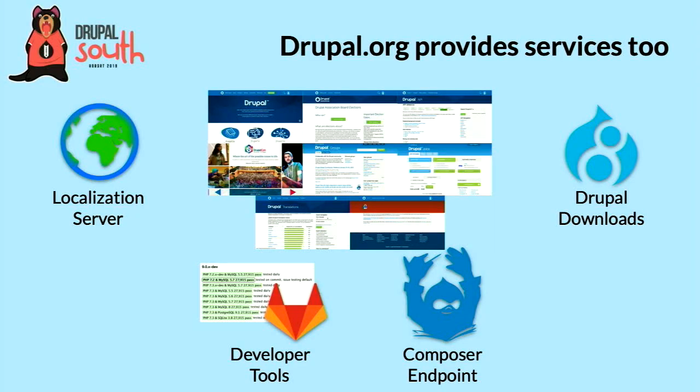Beyond the websites, we also have services. Drupal sites come to Drupal.org for downloading Drupal itself, downloading contributed projects, and a Composer endpoint — since Drupal projects predate Composer, we host a packages-like endpoint. There are also translation file downloads from localize.drupal.org, and developer tools including the GitLab migration earlier this year and Drupal CI. We're adding more on top of all of that.